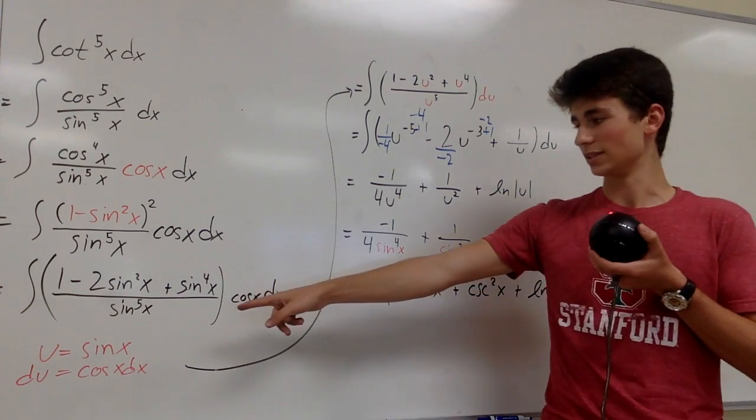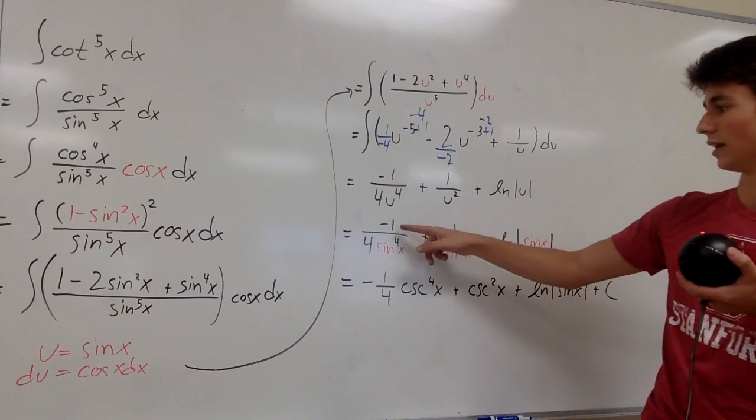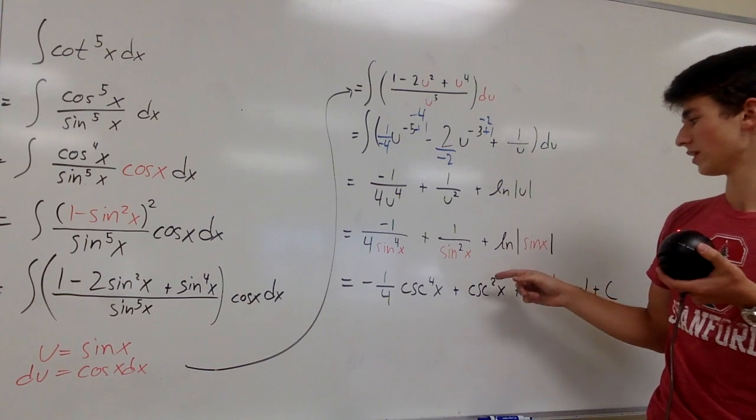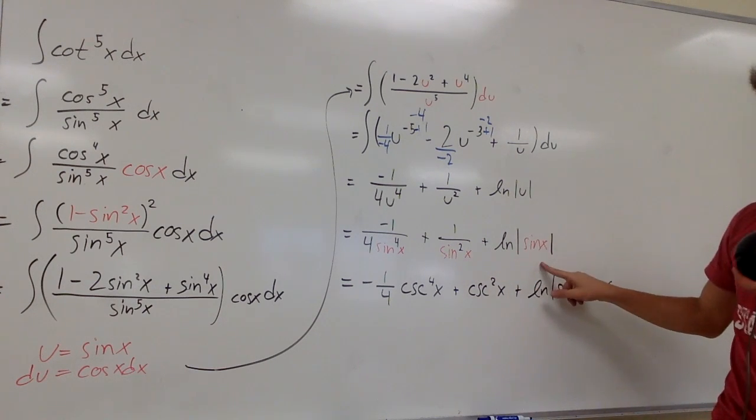If we substitute the sine of x in for u, we get negative one over four sine to the fourth of x plus one over sine squared x plus natural log of the absolute value of sine of x.